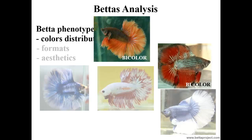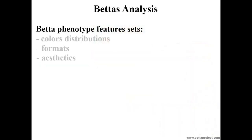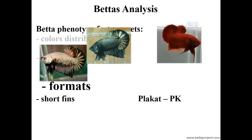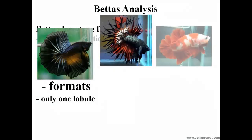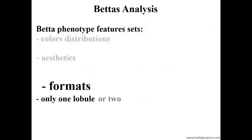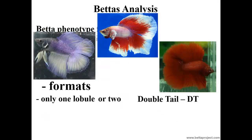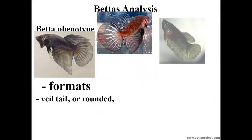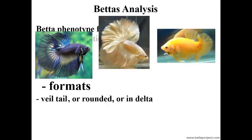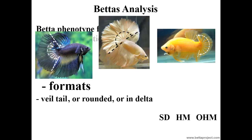Now let us address the BETA formats. The BETA may display short fins — the so-called plakat — or long fins. The BETA may display only one caudal lobule — the so-called single tail — or two caudal lobules — the so-called double tail. The BETA may display the caudal like a veil, or rounded, or in delta. Within the delta format, there are three types: super delta with opening less than 180 degrees, half moon with opening equal to 180 degrees, and over half moon with opening greater than 180 degrees.